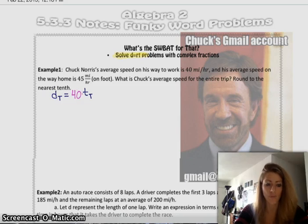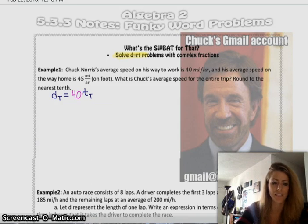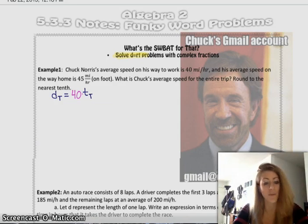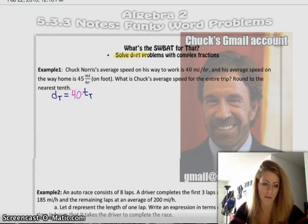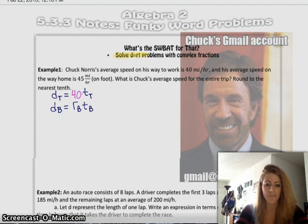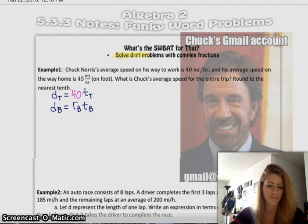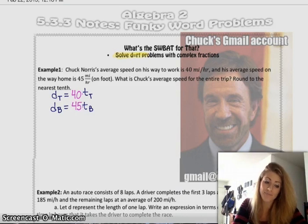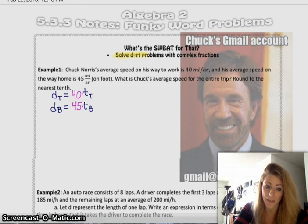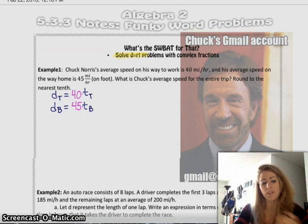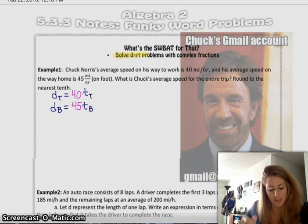So the distance on the way there is equal to the rate on the way there times the time on the way there. We don't know how much time it took him, we don't know the distance. But, we also, we do know the rate, so we can plug that in. Let's do that. Next we want the equation for the distance, rate times time, on the way back. So, I'm gonna call that D sub B equals my rate on the way back times the time on the way back. We do know the rate on the way back as well. It was 45 miles an hour.